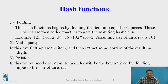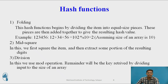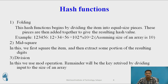Now we will see the second hash function, that is mid-square. Inside mid-square, first we square the input item and then we extract some portion of the resultant digits. So first you multiply the input element by itself — squaring that number — and then retrieve some portion of the result as a hash key. You then store the input number at the position generated by the mid-square function.